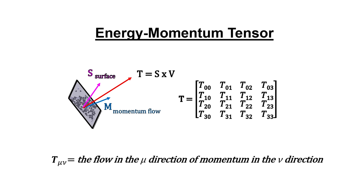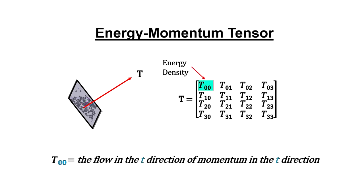Each element represents the flow of momentum across a surface. The first component represents classical energy density at a constant time. This was the only component used in Newton's equations.